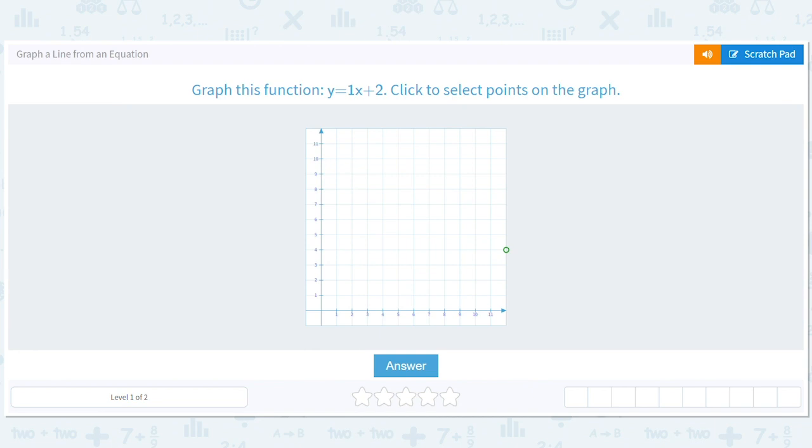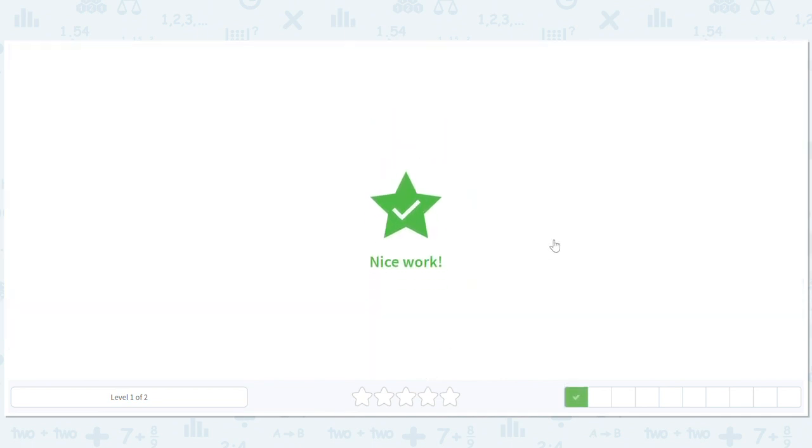So let's go ahead and put our y intercept at two and then put another point up to the right one up one. That's so cool that it makes that line. And click answer. There we go. That simple.